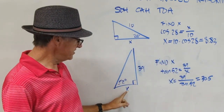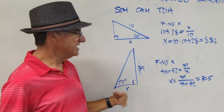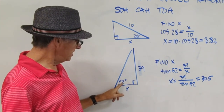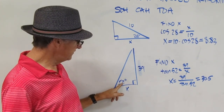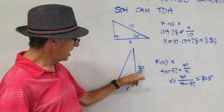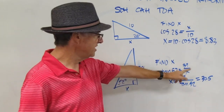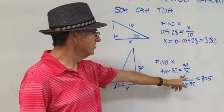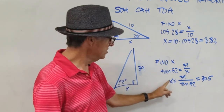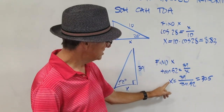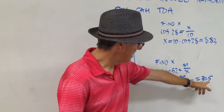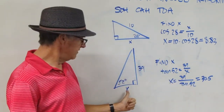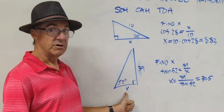Moving right along. This one needs tangent, because tan 52 is opposite over adjacent, which is 39 over x. When the variable is in the denominator, you rearrange — solving for x gives 30.5 for x in that one.